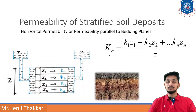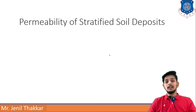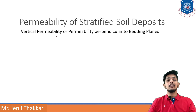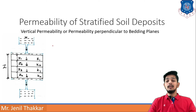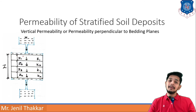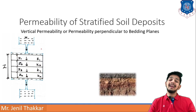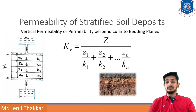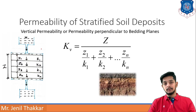Now for vertical permeability, or permeability perpendicular to the bedding planes, the flow passes vertically. The same four layers with thicknesses z1, z2, z3 up to zn and permeabilities k1, k2, k3 up to kn apply. The total thickness is Z. The formula is: kv = Z / (z1/k1 + z2/k2 + ... + zn/kn), where Z is total thickness and z1, k1 are for individual layers.